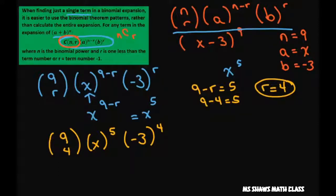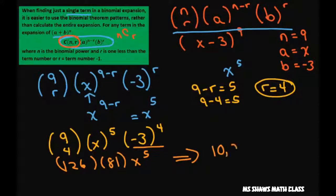And then all you have to do is simplify. 9 choose 4 is 126. So you have 126 times 81. Now this is 81 x to the 5th. And this gives you 10,206 x to the 5th. So that's what we needed and we have that.